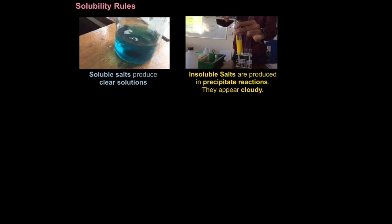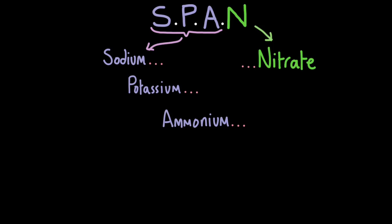But what are the rules of solubility? Let's start off with the most useful rule. Remember this word, SPAN. The S, P, A part of this word represents sodium, potassium and ammonium, and the N represents nitrate. What this useful little word teaches us is that any compound that begins with sodium, potassium, ammonium, or any compound that ends with nitrate will be soluble, no exceptions. Learning just this should help you in most solubility questions when you're looking at reactions.